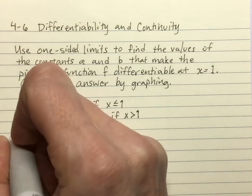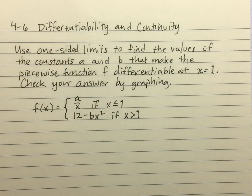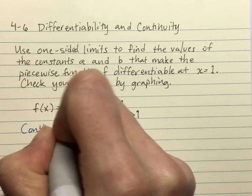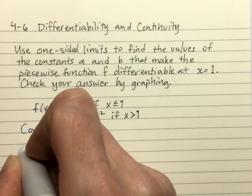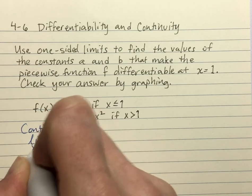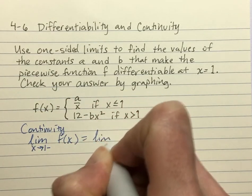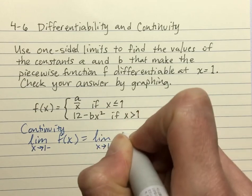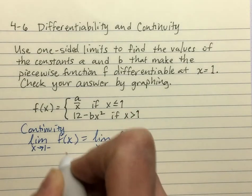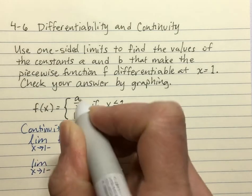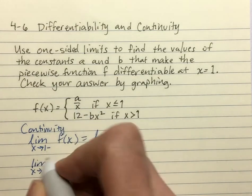So we're going to start with continuity. In order for continuity to happen, this is just like we did before, where the limit as x approaches 1 from the left of f of x is equal to the limit as x approaches 1 from the right of f of x. So we have the limit as x approaches 1 from the left of the left side is the a over x part.